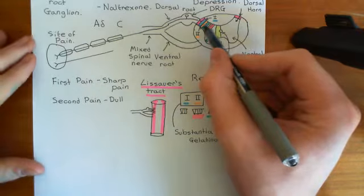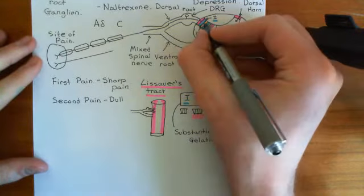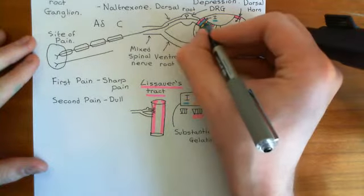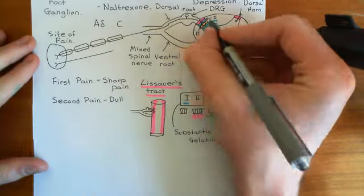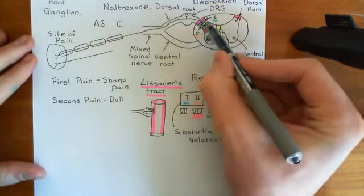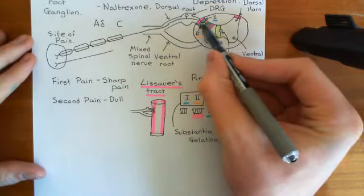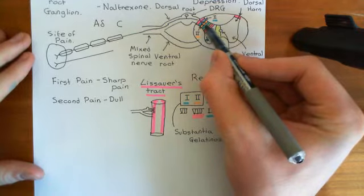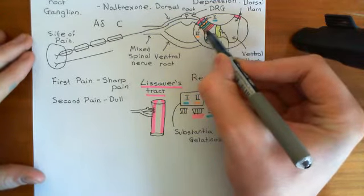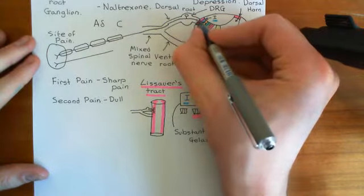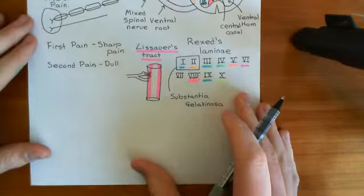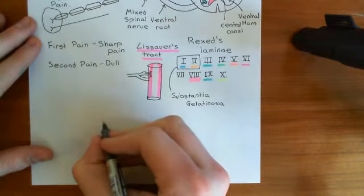What's going to happen is you're going to synapse on the next neuron along. Here's the next neuron along, and it's within the substantia gelatinosa. So it's got its cell body in the grey matter of the spinal cord in the dorsal horn in this substantia gelatinosa region.